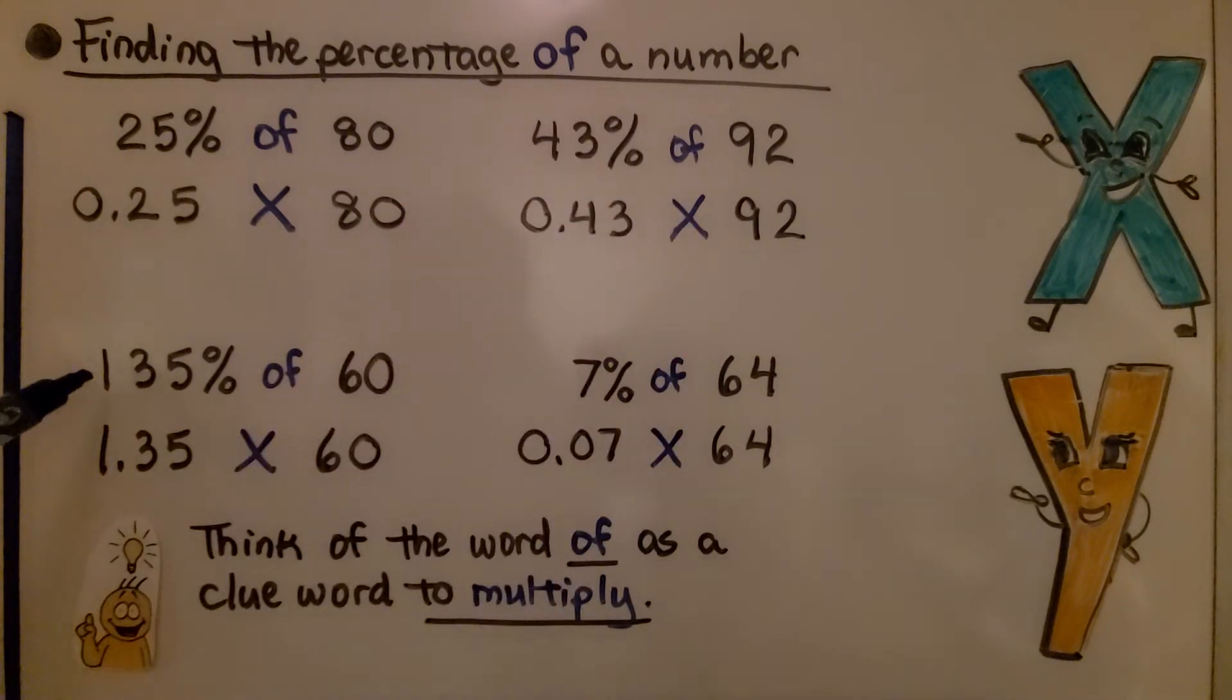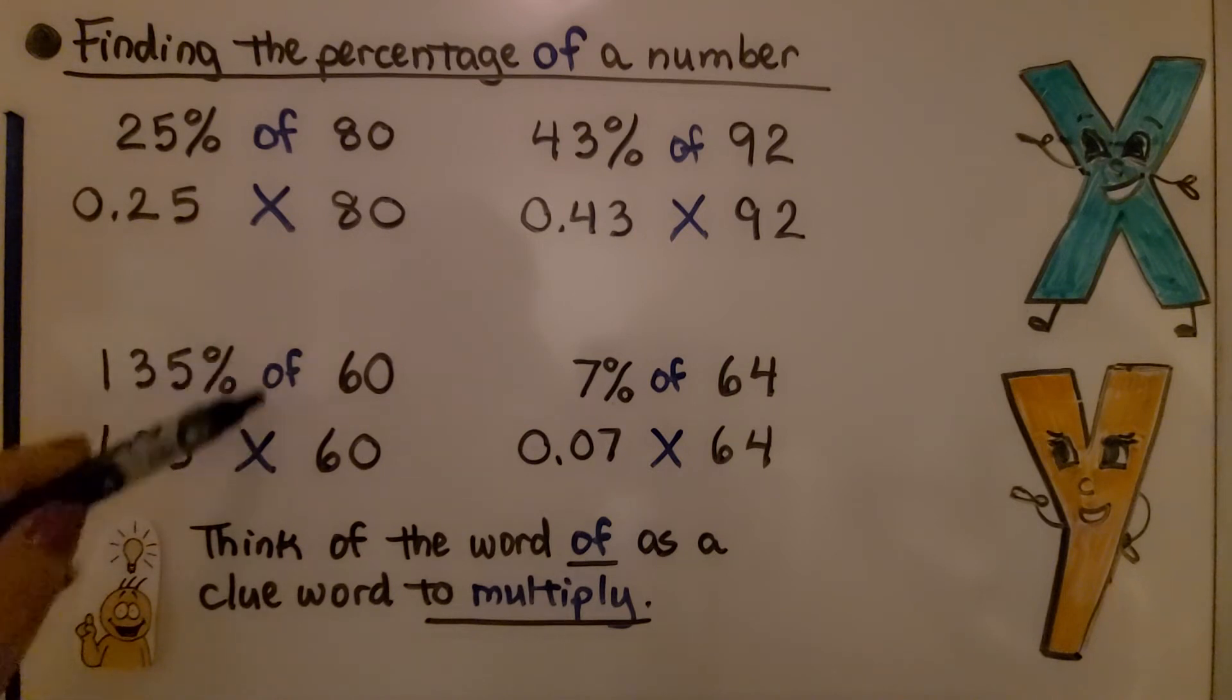For 135% of 60, we write 135% in its decimal form. It's greater than 100%, so we know it's going to be greater than 1. We have 1 and 35 hundredths times 60.